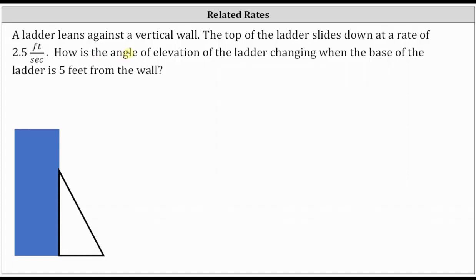A ladder leans against a vertical wall. The top of the ladder slides down at a rate of 2.5 feet per second. How is the angle of elevation of the ladder changing when the base of the ladder is five feet from the wall?